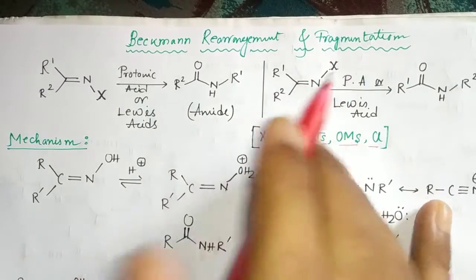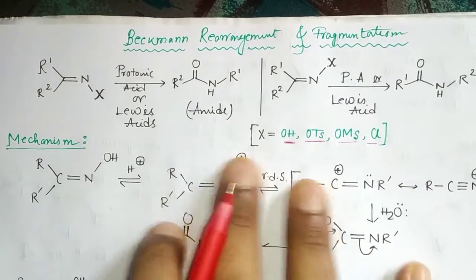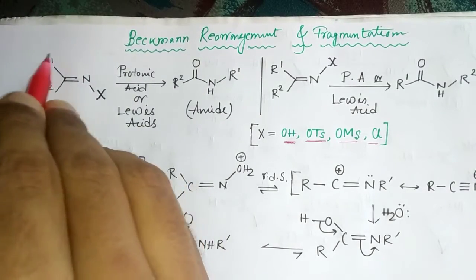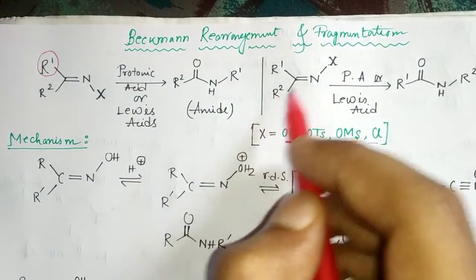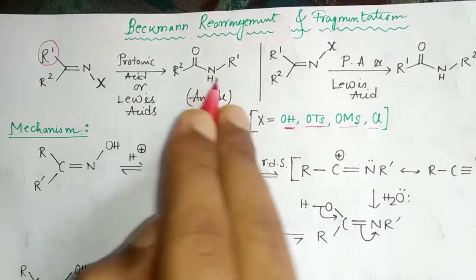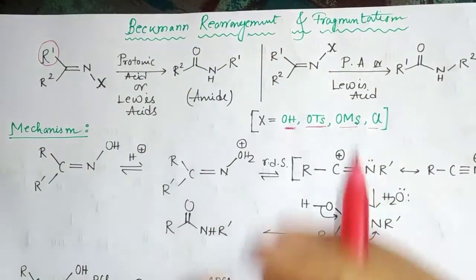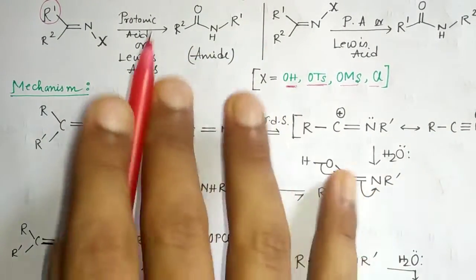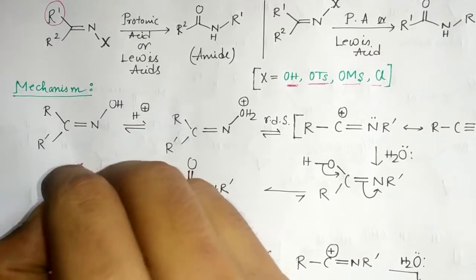I have written two different kinds of structures. The important step for this reaction is anti-migration. Here I'm taking a compound where X and R2 are syn to each other, and R1 is anti. In the other structure, R2 is anti. By changing this, we get two different kinds of amide products. The mechanism involves anti-migration — not anti-elimination, but anti-migration.